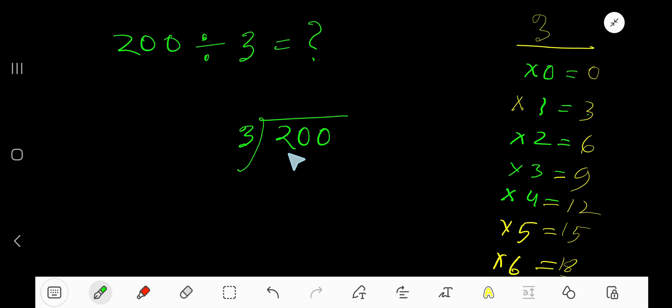3 goes into 2 how many times? Actually, 2 is less than 3, so 0 times. 0 times 3 is 0. Subtract. Bring down the next digit.